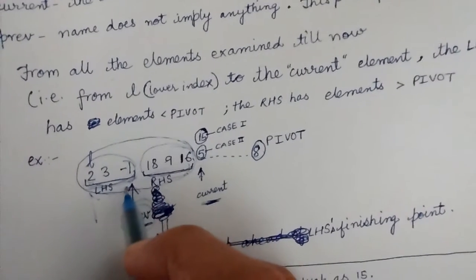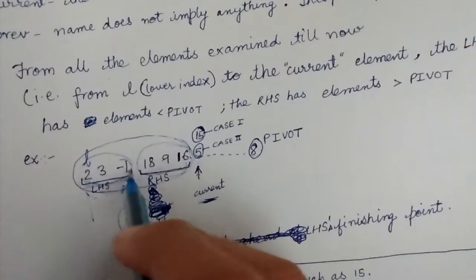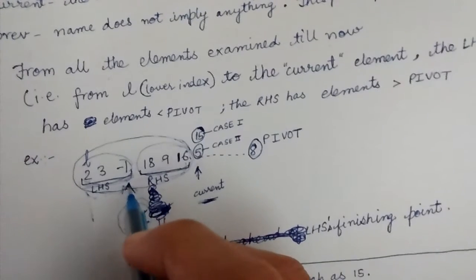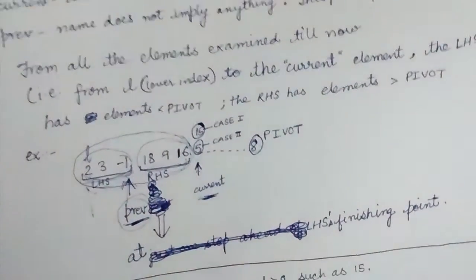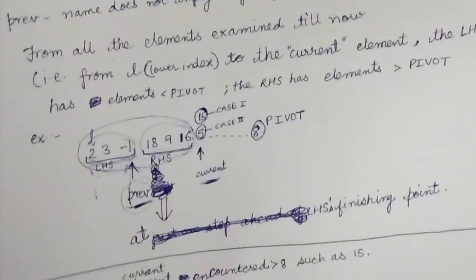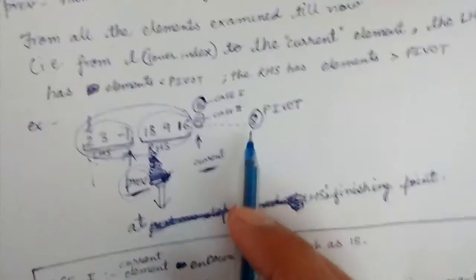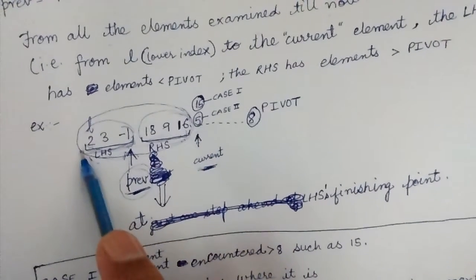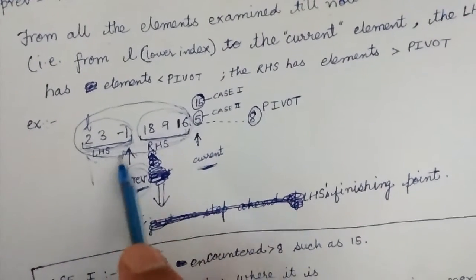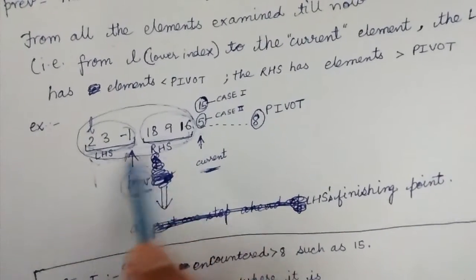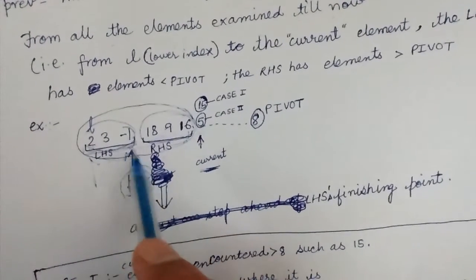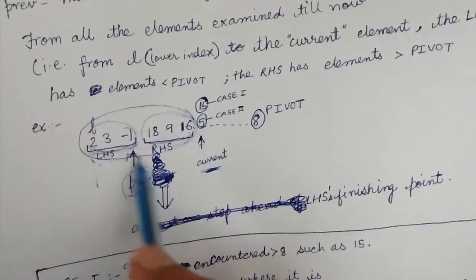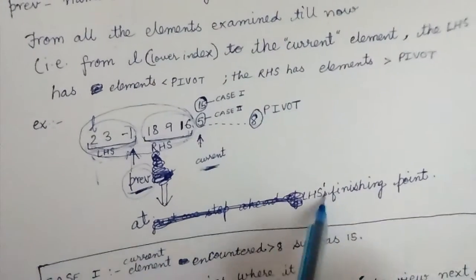We'll see why this prev pointer is required. For now, understand that current is the element being examined, these are elements already examined, and if we partition them into LHS and RHS sections, prev points to the last element of LHS — that is, the LHS finishing point.